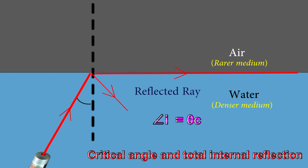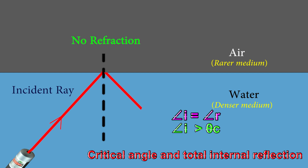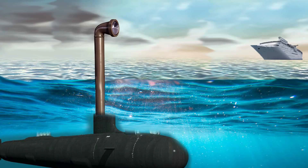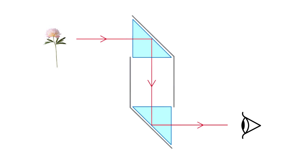The critical angle is the minimum angle of incidence at the boundary between two media where light is entirely reflected back into the denser medium, rather than refracted into the less dense medium. A periscope is an optical device comprising two right-angled prisms that allow users to see over tall objects by using total internal reflection of light within the prisms.